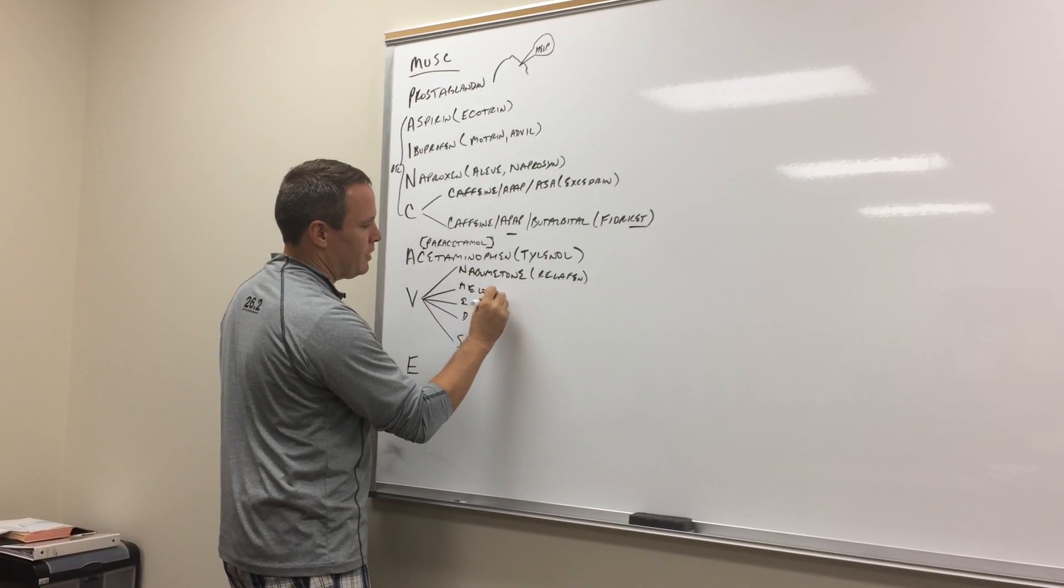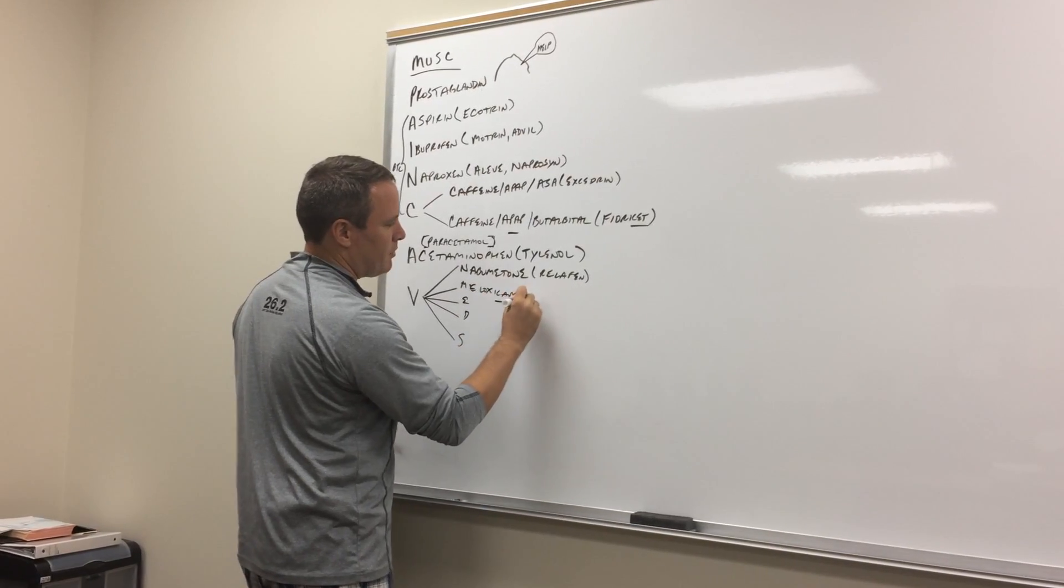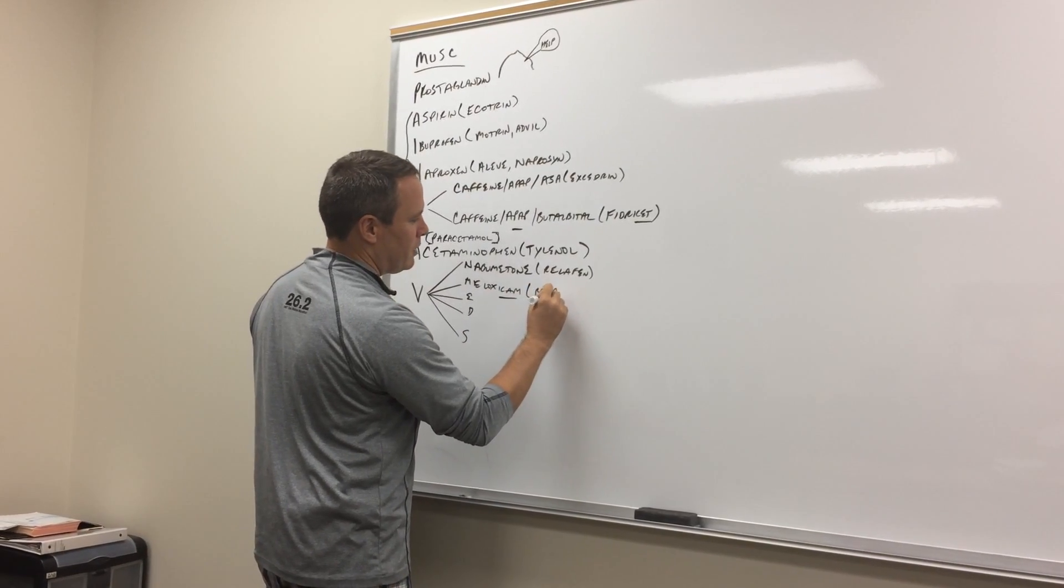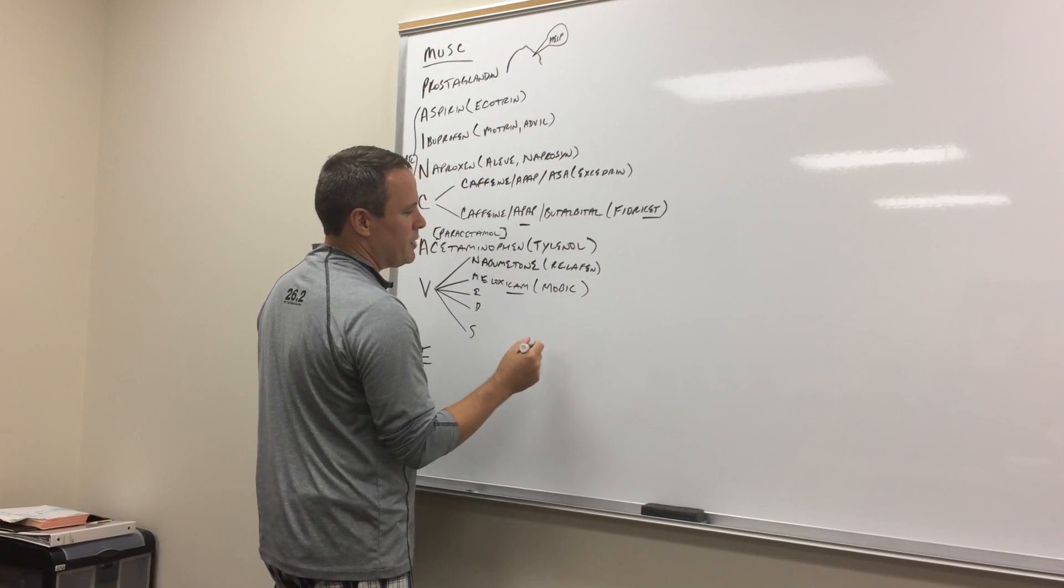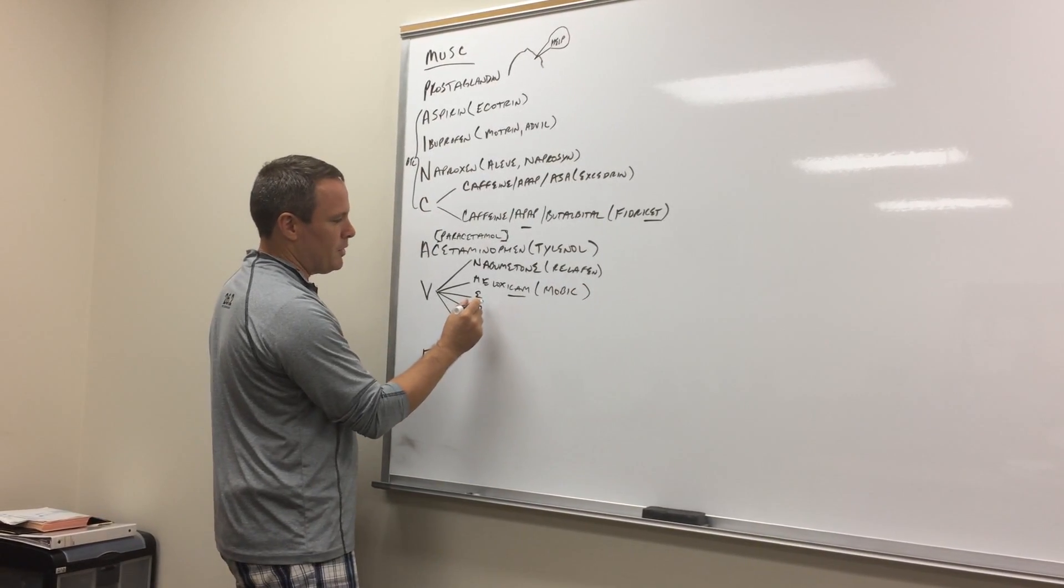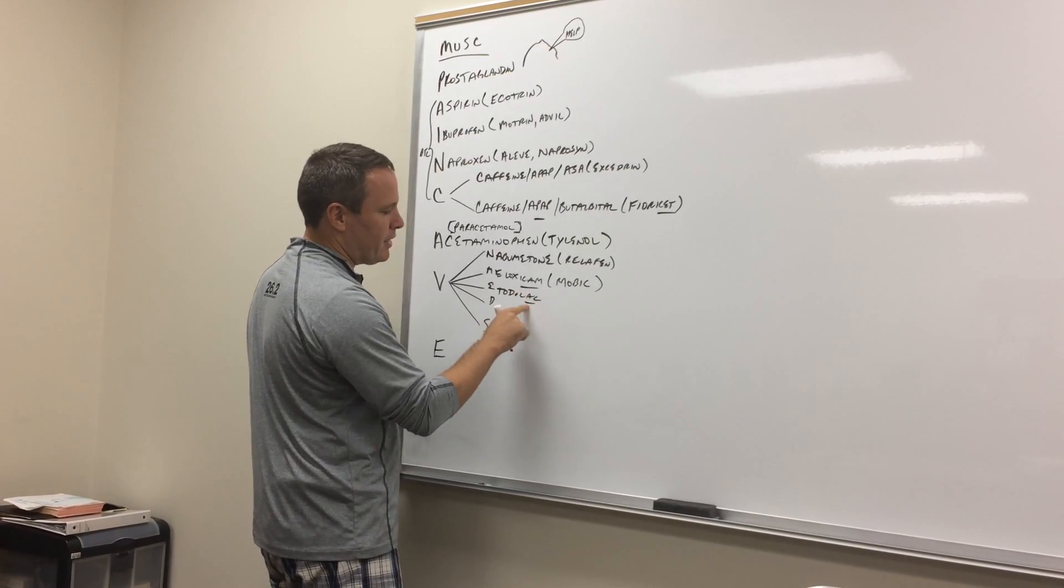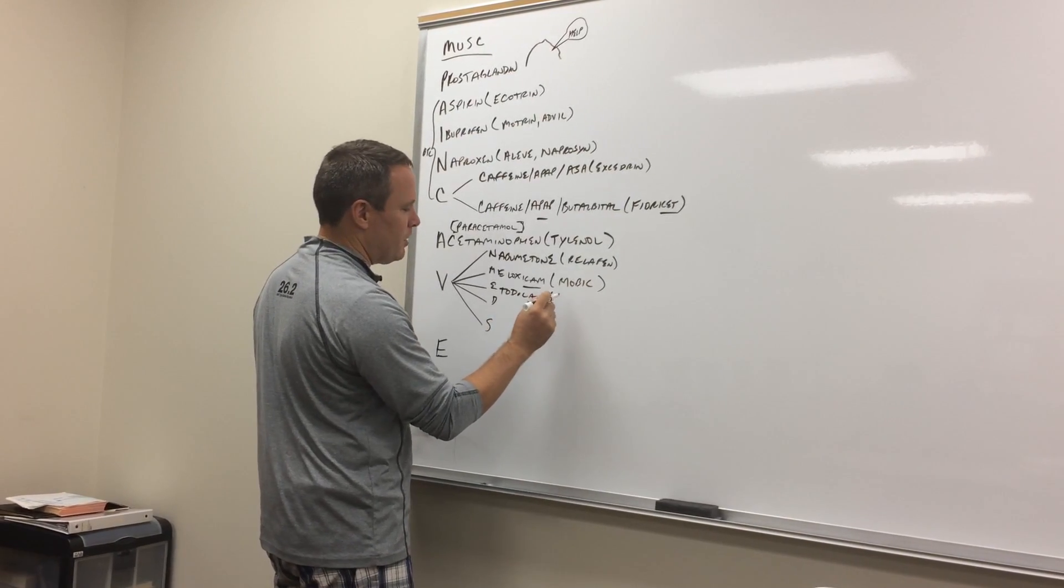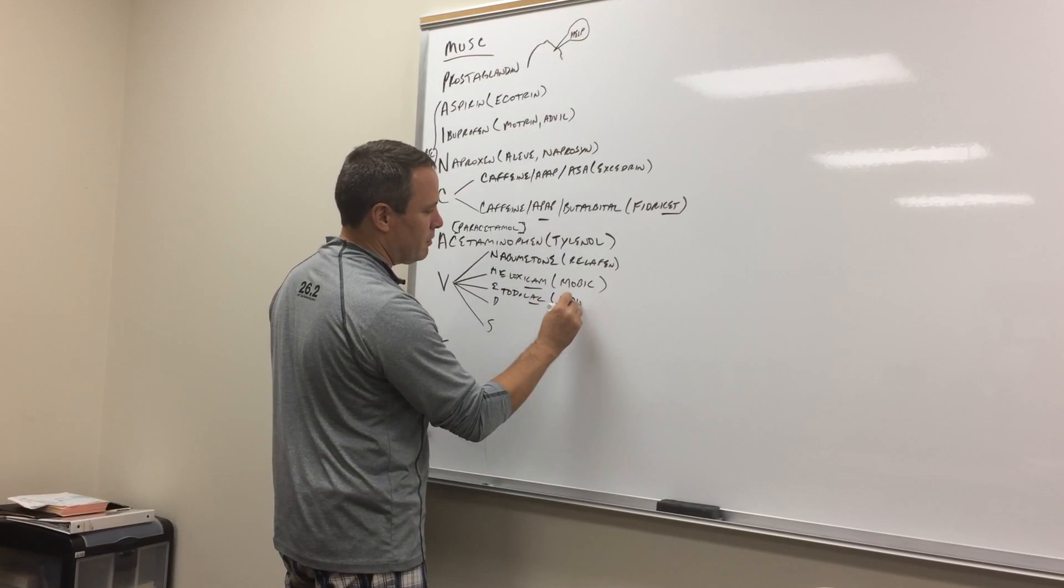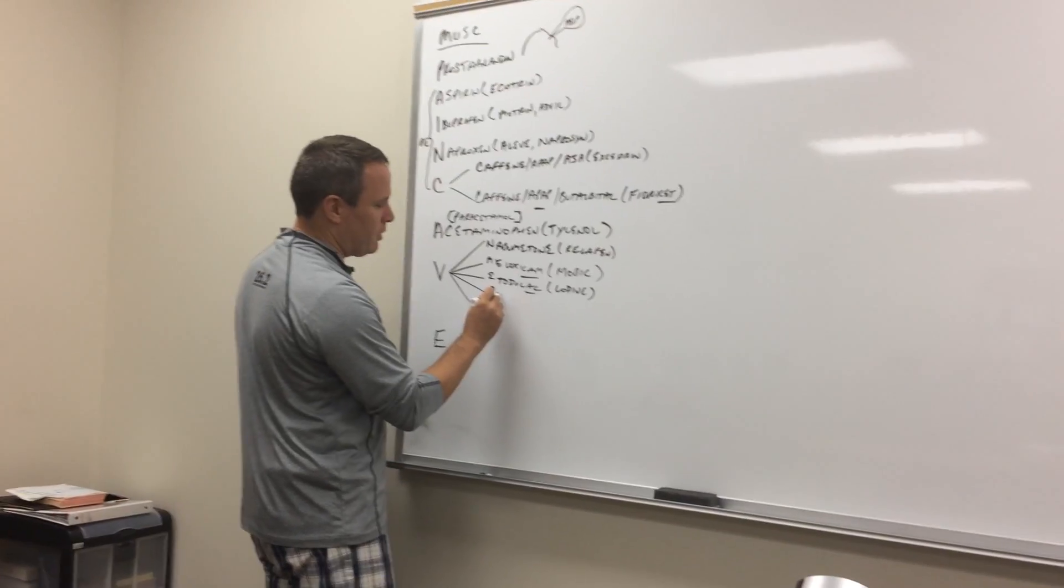Meloxicam. The '-acam' stem. That's Mobic. You only have to take it once a day. I think that's the big thing with that. Etodolac. You've got the 'ac-ac,' which is a really small stem. You don't see that too much. That's Lodine. Then you've got diclofenac, which is Voltaren. There's some other names for it.